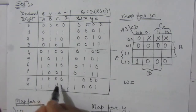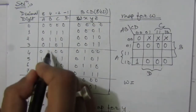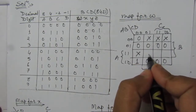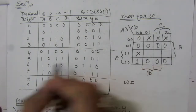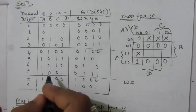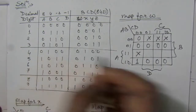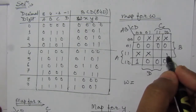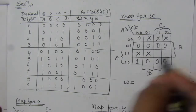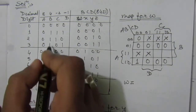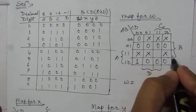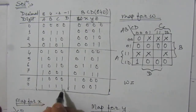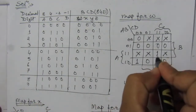For m12 (1100), there is no 1100 in the table, so we put a don't care condition. For m13 (1101), 1101 is not present, so we put a don't care condition. For m14 (1110) — that is 8+4+2 — 1110 is not there, so don't care. For m15 (1111), the W value is 1, so put 1 here.